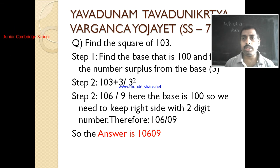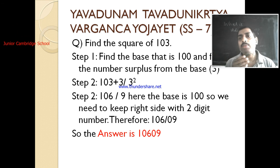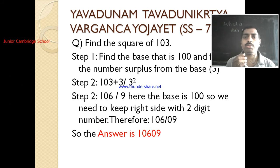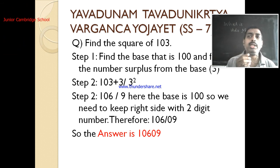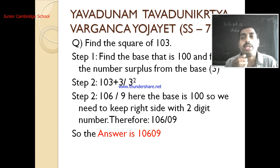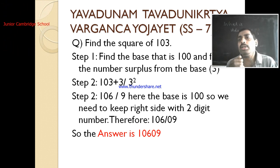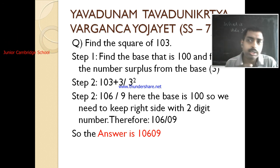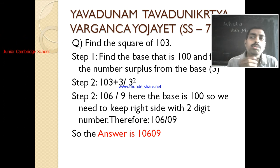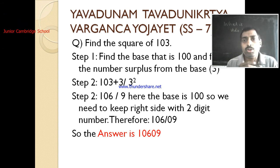Let me show you one example. Let's suppose we want to find the square of 103. First, we need to know the base. Here the base is 100. We then see how far 103 is from the base — the difference is 3.